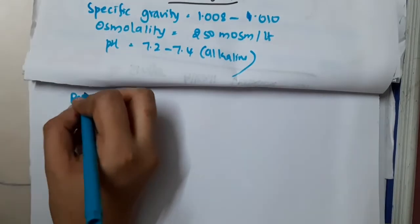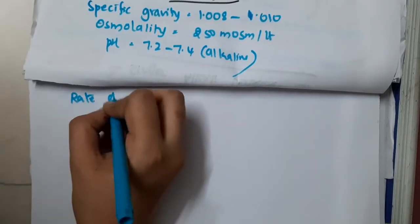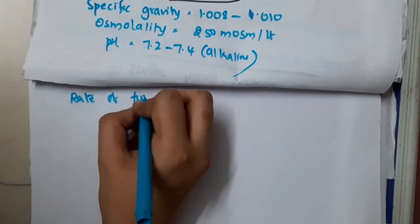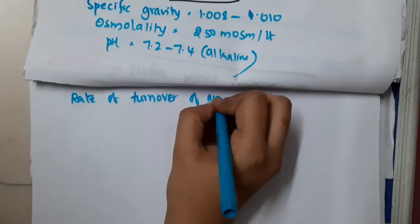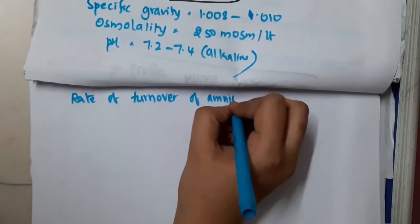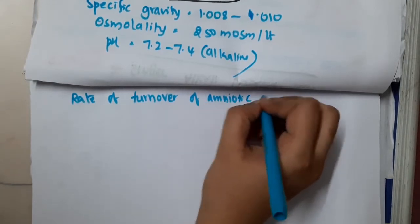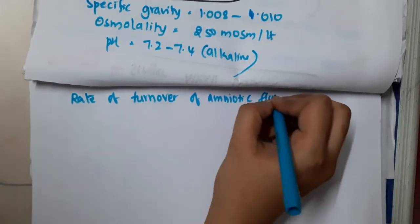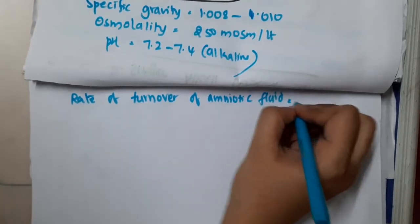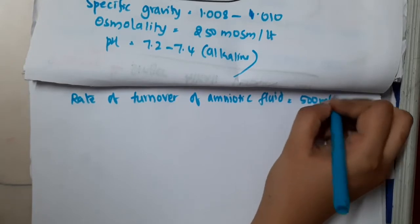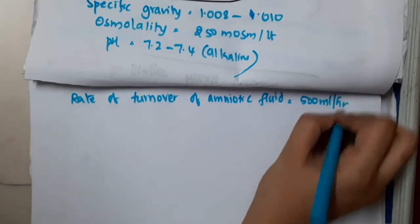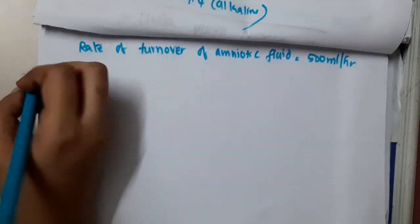The rate of turnover of amniotic fluid is around 500 ml per hour.